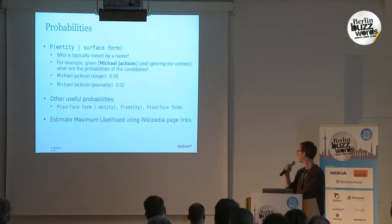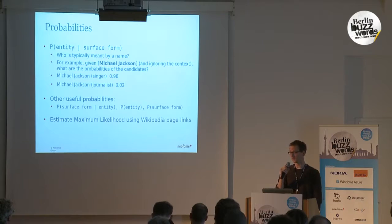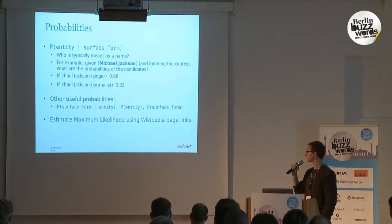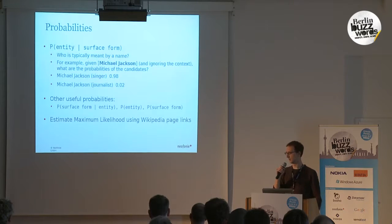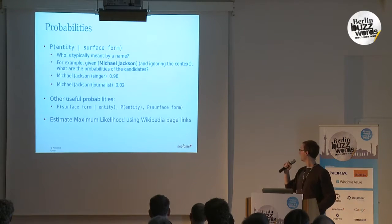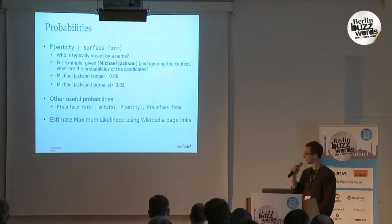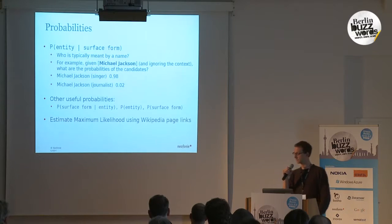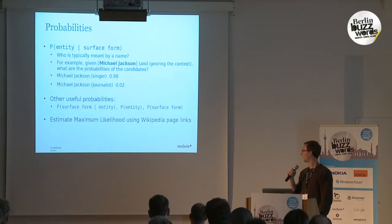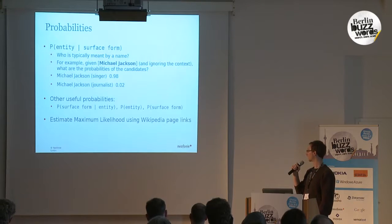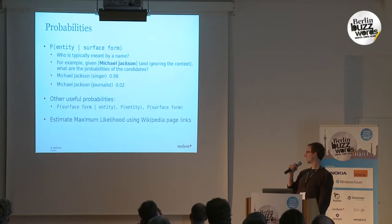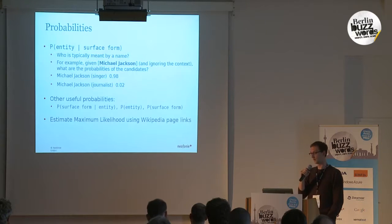We need some way of encoding the knowledge that normally Michael Jackson refers to the singer. How do we do that? We try to estimate some probabilities using Wikipedia. Given a surface form — a string — what is the probability distribution of the possible entities that the string can refer to? For example, given "Michael Jackson" and ignoring the context, what is the probability distribution for the singer and the journalist? It should ideally be something heavily favoring the singer. In general, we use a maximum likelihood estimate using Wikipedia page links.